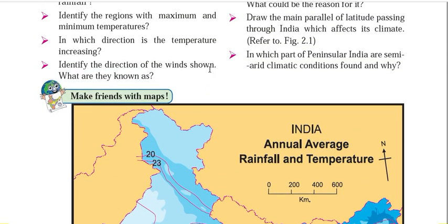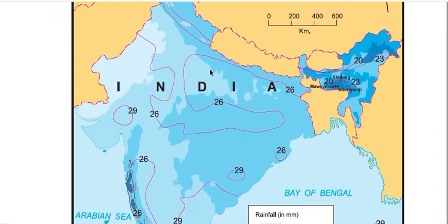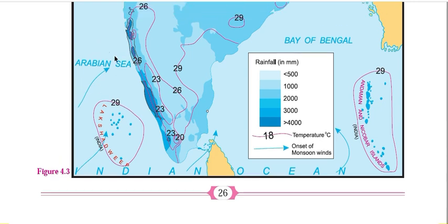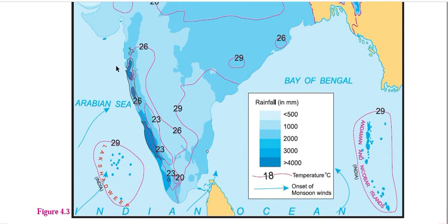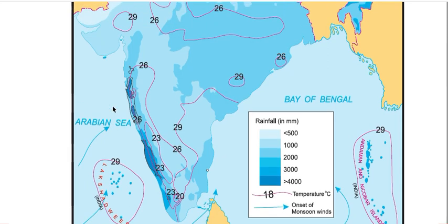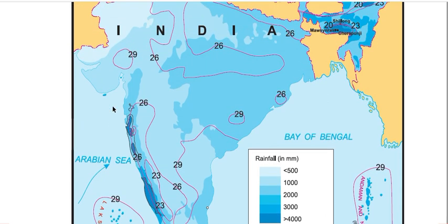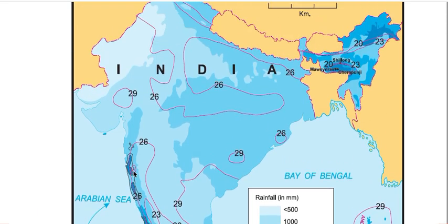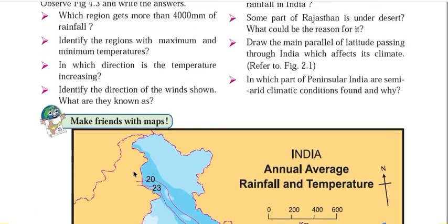The next question: identify the direction of the winds shown and what they are known as. You can easily demarcate the direction of wind — these are the south-western monsoon winds. So they are known as south-western monsoon winds.